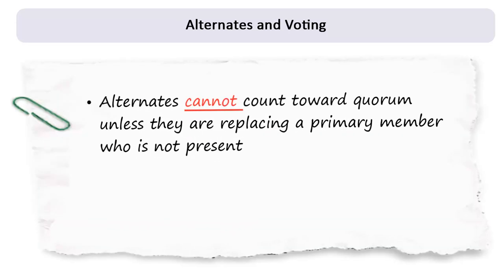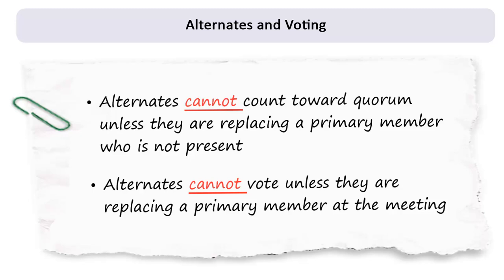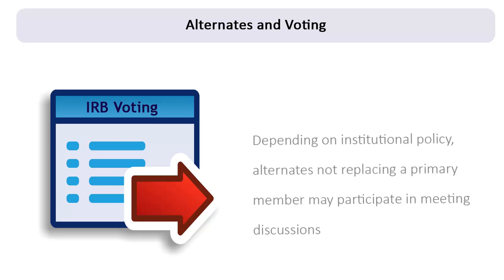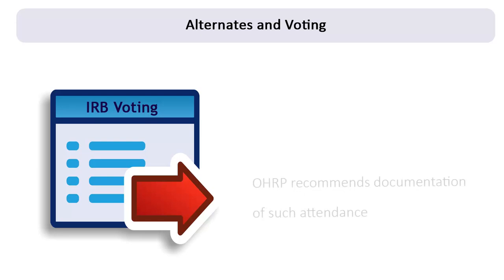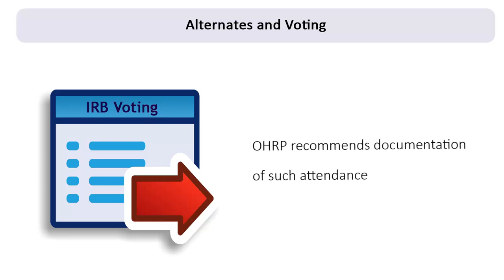Just as alternates cannot count toward a quorum unless they are replacing a primary member who is not present, alternates also cannot vote unless they are replacing a primary member at the meeting. If institutional policy allows, alternates may attend the meeting and participate in the discussion even when they are not serving in place of a primary member, similar to how a consultant might participate. OHRP recommends that their attendance at the meeting be documented.